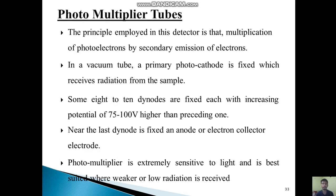The last one is the photo multiplier tube. The principle employed in this detector is the multiplication of photoelectrons by secondary emission of electrons. In a vacuum tube, a primary photocathode is fixed which receives radiation from the sample. Some 8 to 10 dynodes are fixed, each with an increasing potential of 75 to 100 volts higher than the preceding one.